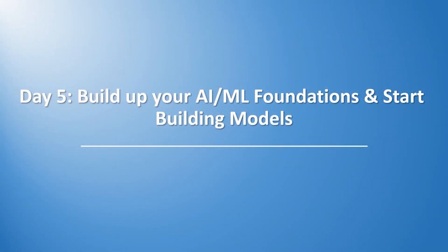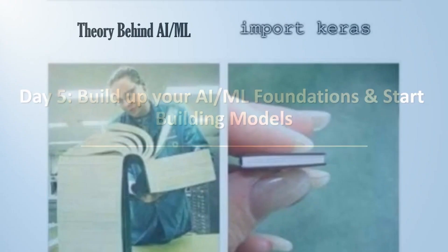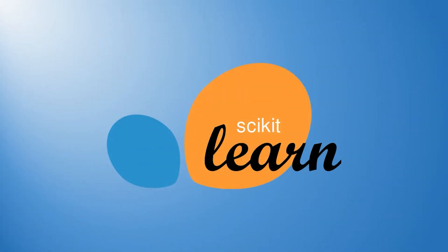Day five, you'll build your AI and ML foundation and start working with machine learning models. Although you can get started using a high-level library, it's much better if you have some foundational AI concepts in your head. I'll show you resources to quickly master these fundamental concepts. Then we'll talk about building machine learning models using the popular library scikit-learn, which lets you quickly apply a number of machine learning models by just changing a single line of code.